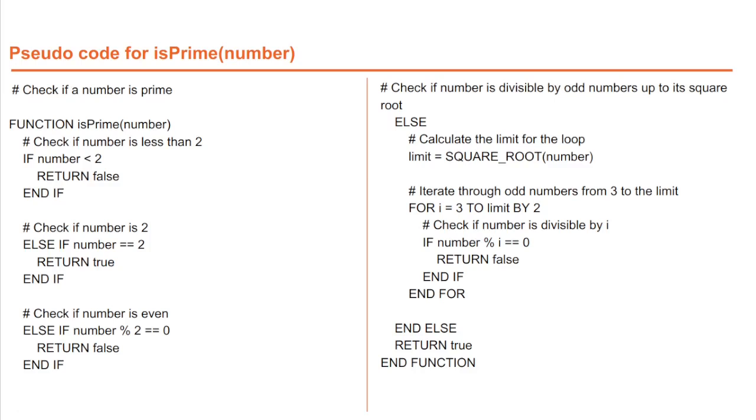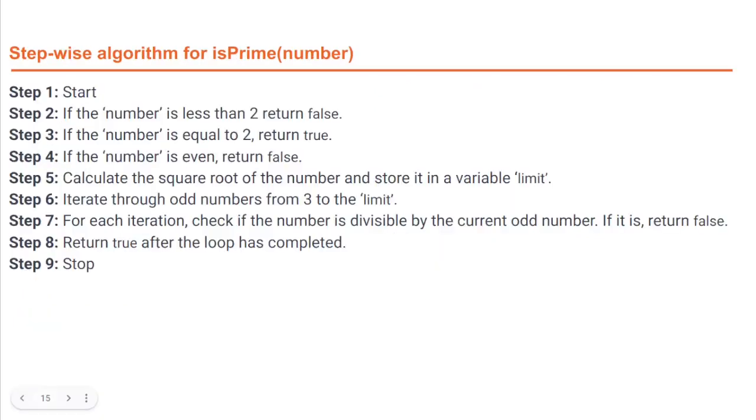Now, let us have a look at the stepwise form of the same algorithm for checking a number for prime. Have a look at the algorithm which is visible on your screen. Again, take some time to read the algorithm. I suggest that you pause the video, read the whole thing slowly and then resume. The first thing you will notice is that it appears slightly shorter, and that is primarily due to the way it is written, specifically due to the missing indentation and the use of comma.